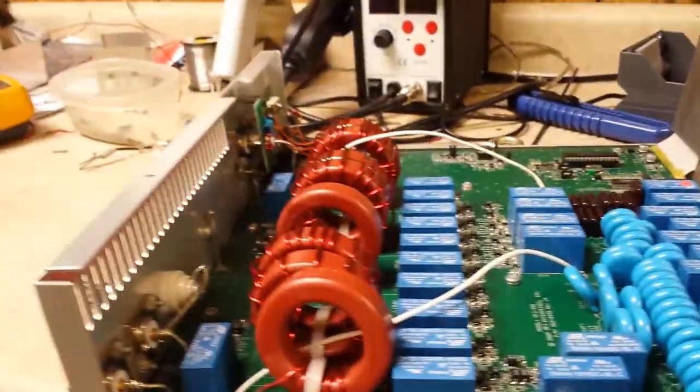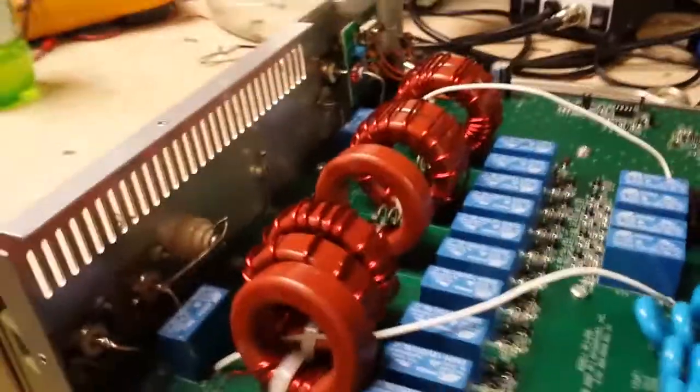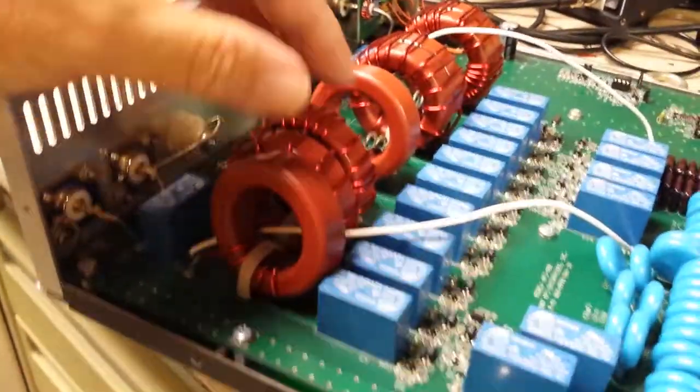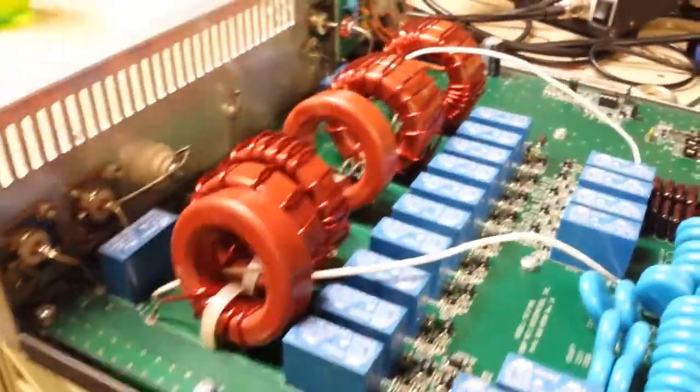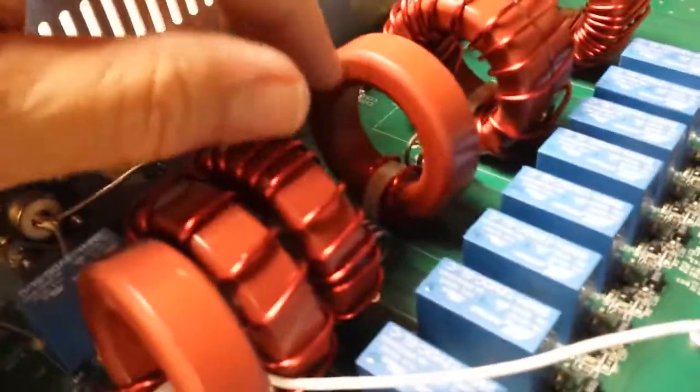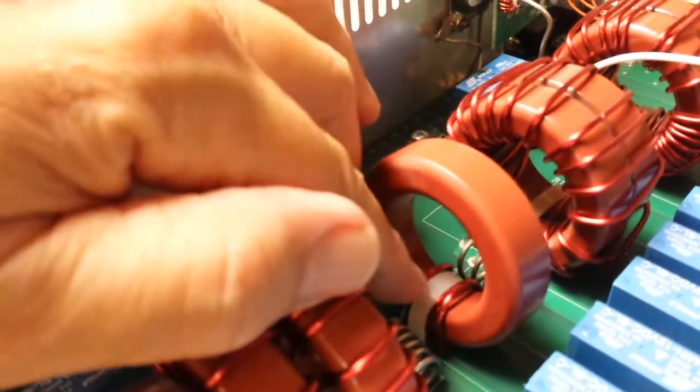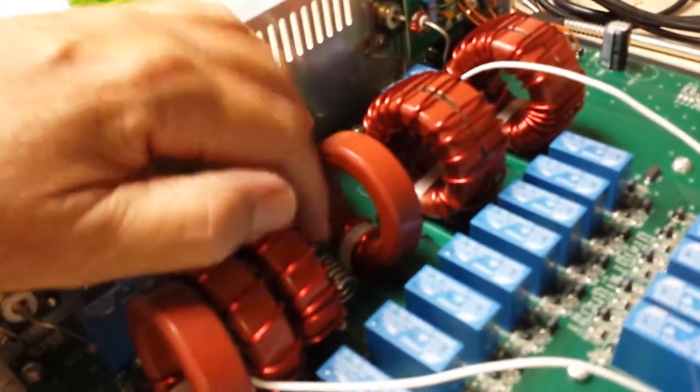The most common problem I suspect is the toroids tend to break their solder joints. As you can see here, the only thing holding these in is of course the solder joints for this 14 gauge wire and one wire tie.